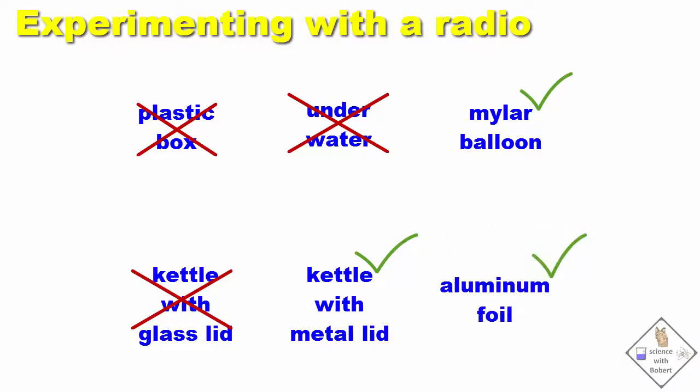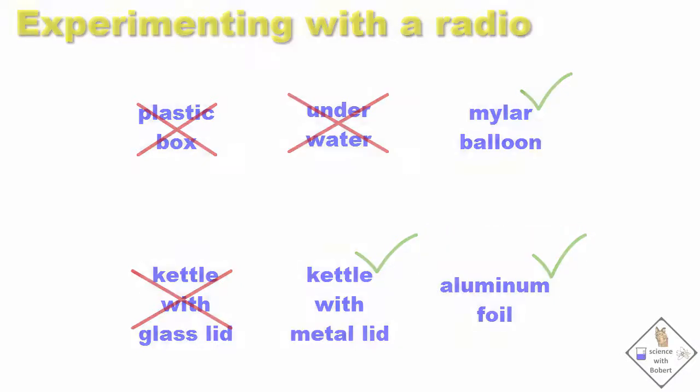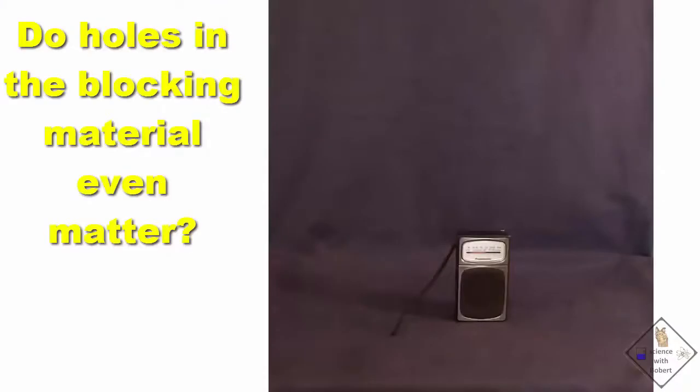It looks like aluminum foil would be a great material. But aluminum foil tears easy. What if we get holes in the aluminum foil? Can it still effectively block radio signals? What do you think? Let's try it and find out.